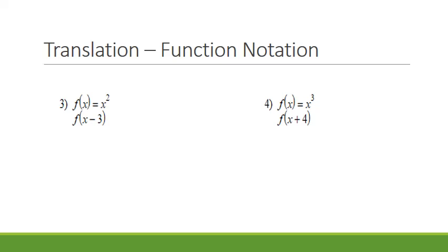For these examples, we had our parent function x squared and now we're saying x minus 3. So instead of y minus 3, it's the x that is affected. If we are adding or subtracting from x, it goes opposite of how we would think. Usually we'd say x minus 3 goes left — but this one is right, 3 units. For example 4, same thing: we're adding to x, so it's going to go opposite of how we would think, going left 4 units.